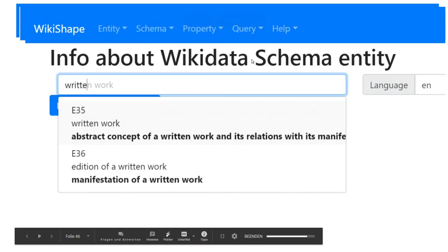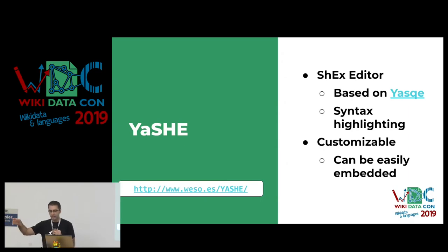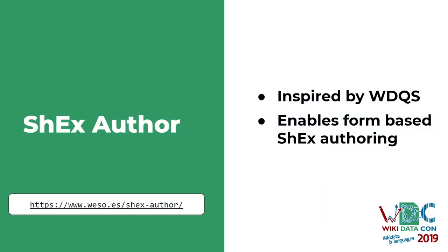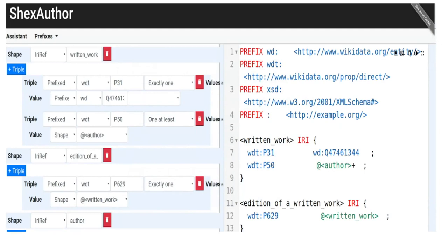This is WikiShape. The shape expressions editor is also an independent project on GitHub — you can use it in your own project; if you want to make a shape expressions tool, you can just embed it. One of my students also created an editor for shape expressions inspired by the Wikidata query service, where you have a more visual editor for SPARQL queries. This is a form-based shape expressions editor where you can put the different rows and fields, which will probably take a bit longer but is more accessible.